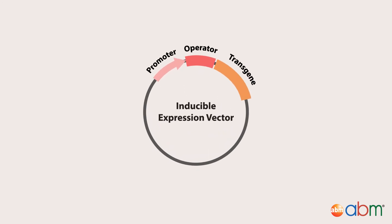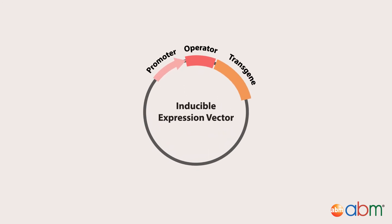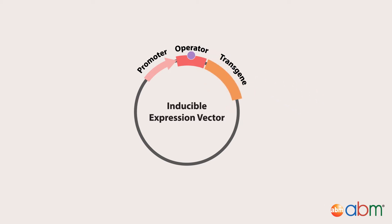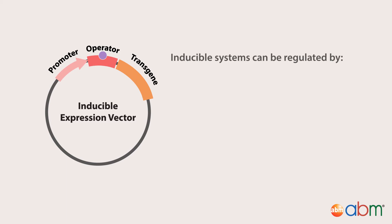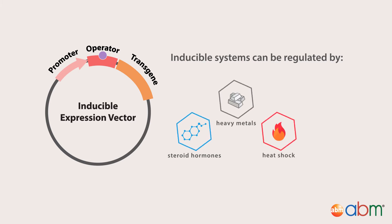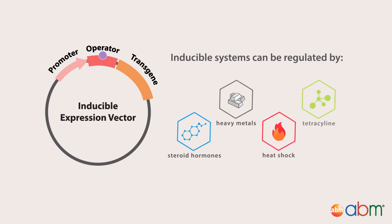For these cases, it is useful to use a gene expression vector with a promoter that only becomes active once a given compound is added. A number of inducible systems have been developed for use in mammalian cells, including regulation by steroid hormones, heavy metals, heat shock, and tetracycline.